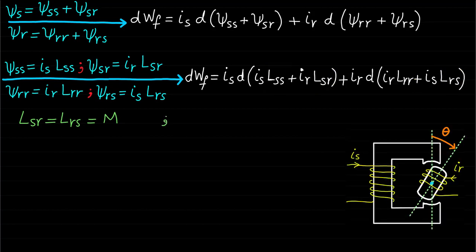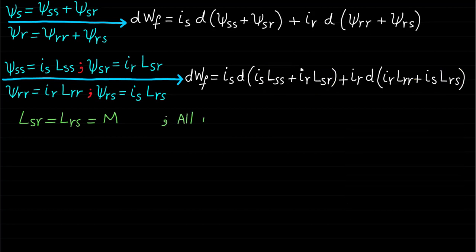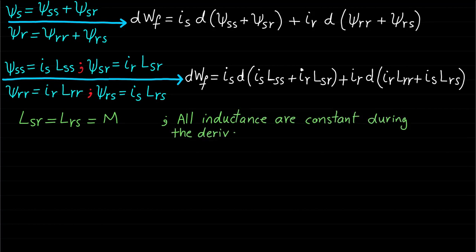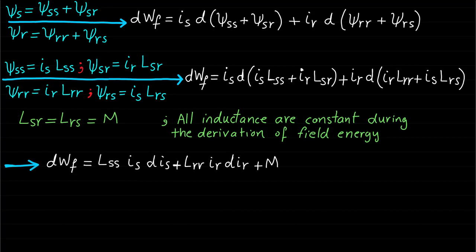We learned from the previous lecture that all these inductances change with respect to rotor position for this rotating system. However, these inductances are constant at this point because we assume there is no mechanical movement when we are in the process of deriving the field energy WF. So we can take the inductances out of the derivative.